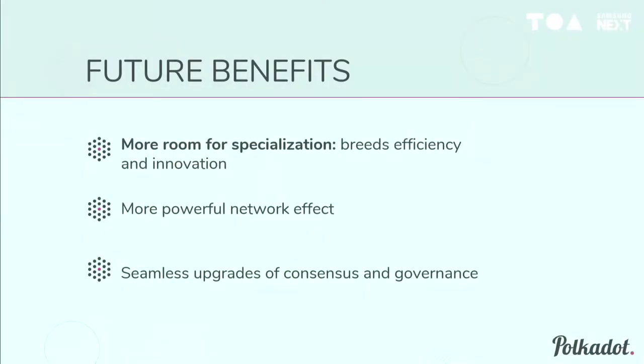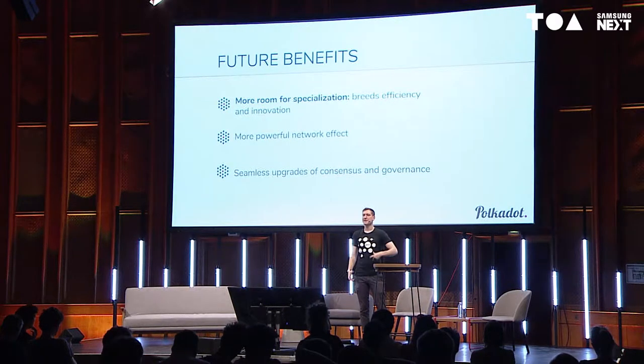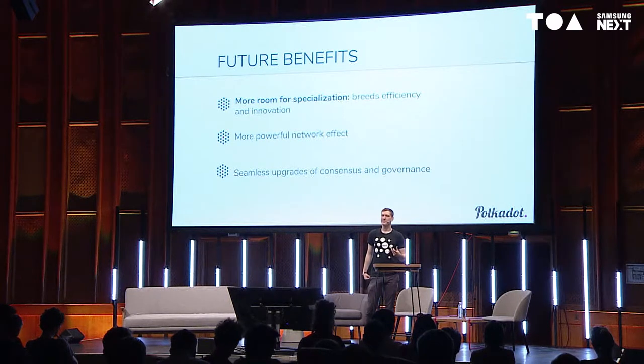Future benefits of interoperability would include more room for specialization. If you don't lock blockchain projects into a specific model, they're free to use whichever computation or data formats are most suited to the work they're trying to do, which means higher throughput overall. We also get a more powerful network effect, and seamless upgrades of consensus and governance — by having the interoperability framework agree on the next stage, we can upgrade it without affecting any of the sub-projects hooked into the framework.